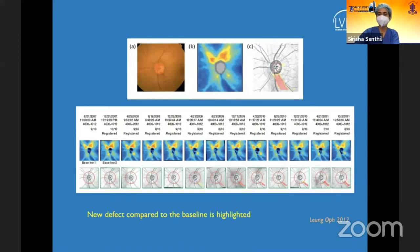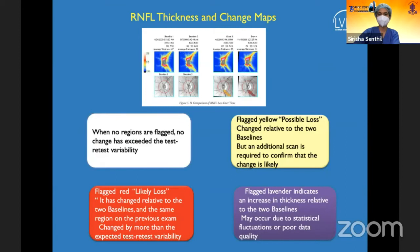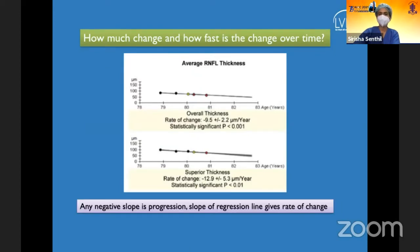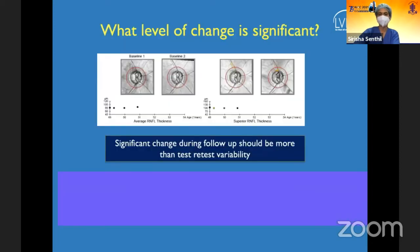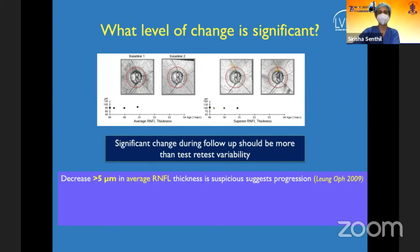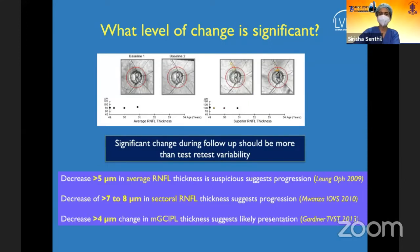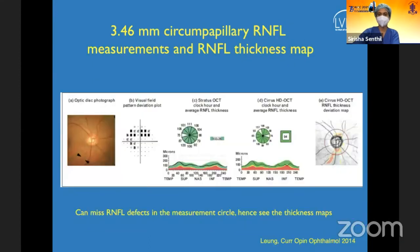Progression algorithms highlight changes not present at baseline by serially tracking changes over time. Trend analysis with a negative slope suggests change, but not all negative slopes indicate true progression. Key thresholds: a decrease of more than 5 microns in average RNFL thickness is suspicious for progression; more than 7–8 microns in sectoral RNFL suggests progression; more than 4 microns in GCIPL thickness indicates likely progression. These are guidelines, not hard rules.